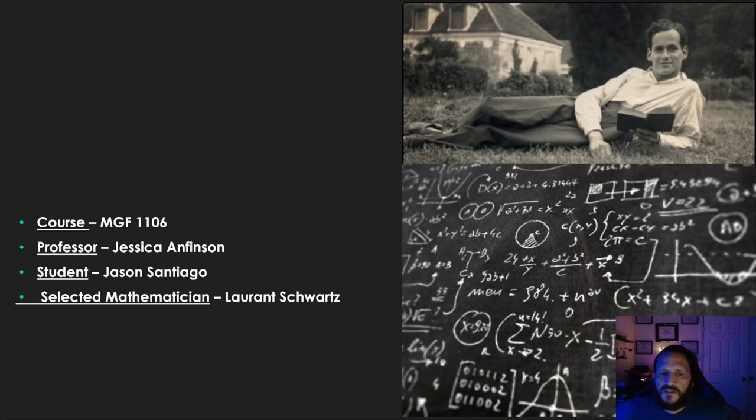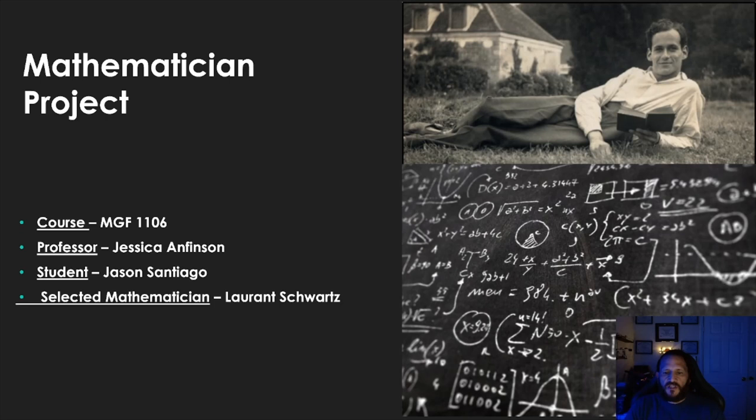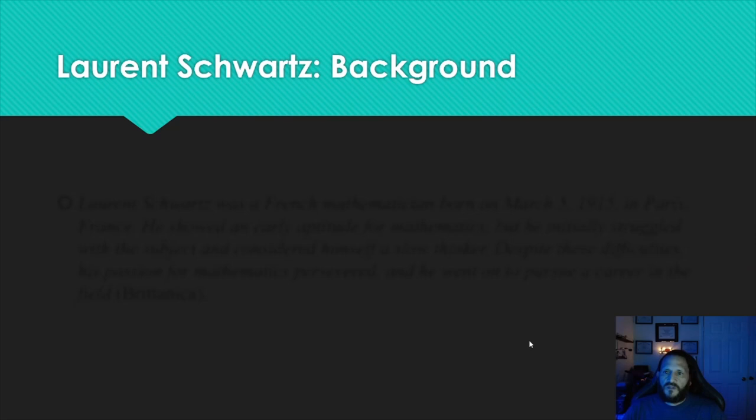Okay, hello. My name is Jason Santiago and this is my mathematician project. The mathematician that I chose was Laurent Schwartz, and this is a picture of him. While doing research, I found out he was struggling with polio most of his life. I always wondered why his legs were so thin and frail, and I became aware of why he was frail in this picture.